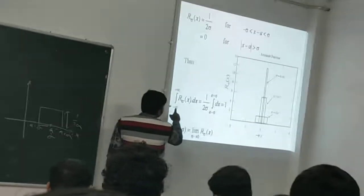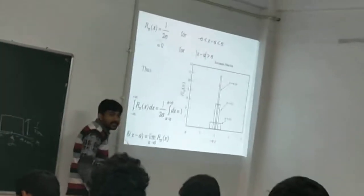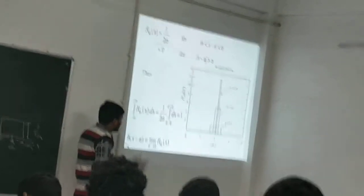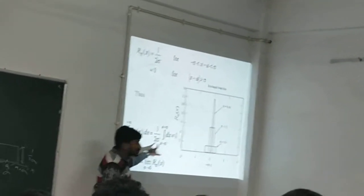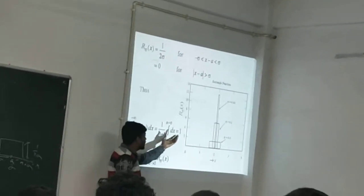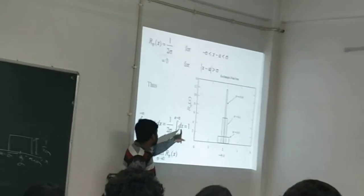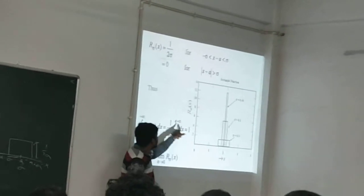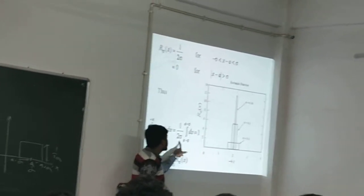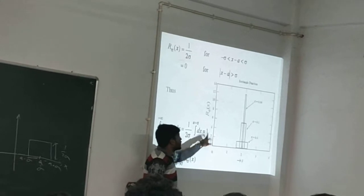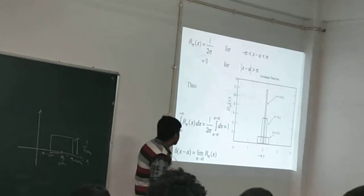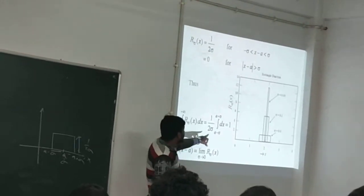The integral from minus infinity to plus infinity is the area of the curve. That is, A sigma of X equals 1 over 2 sigma, which is a constant. And the integral dx from A minus sigma to A plus sigma equals 2 sigma. So 2 sigma cancels out and we get 1. So the area of the curve is one.